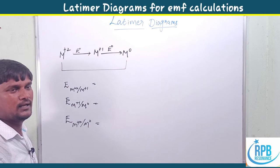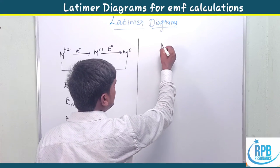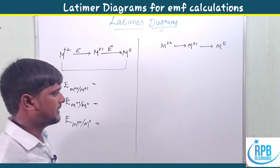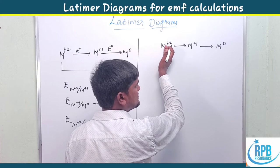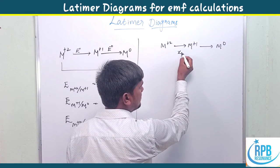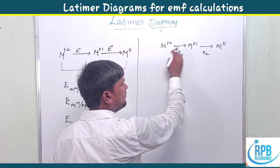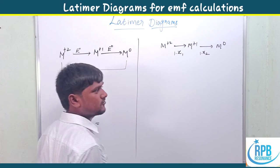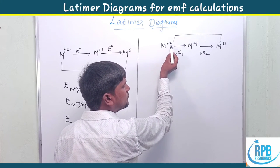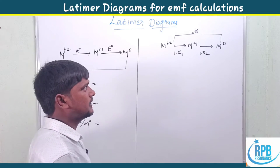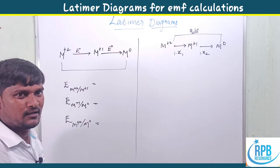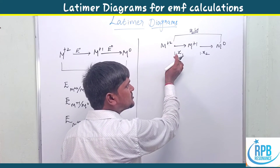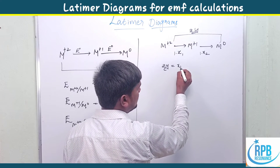With Latimer diagrams, write M²⁺ → M⁺¹ → M⁰. Call the EMF from +2 to +1 as x₁ (one electron transferred, so contribution is 1·x₁) and from +1 to 0 as x₂ (one electron, so 1·x₂). The overall +2 to 0 involves two electrons, so it is represented as 2y. According to the Latimer diagram: 2y = x₁ + x₂. This is the core equation from the Latimer diagram.